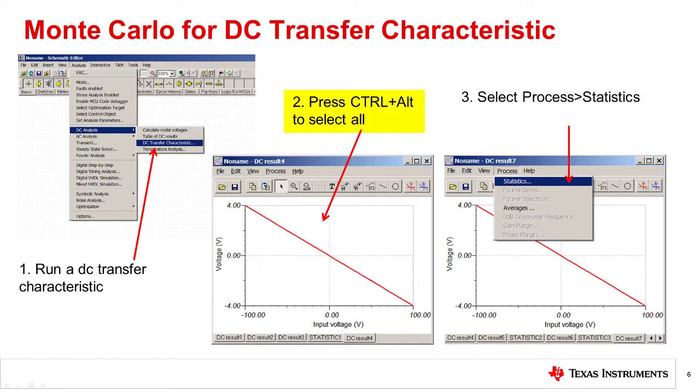To do this, we first need to select all of the curves by pressing Ctrl+Alt. Next, under the Processes menu, we should select Statistics.